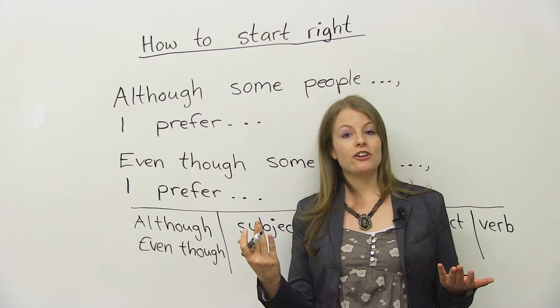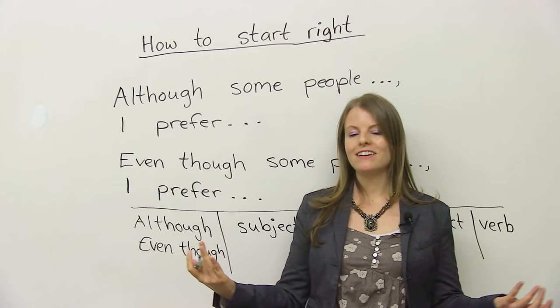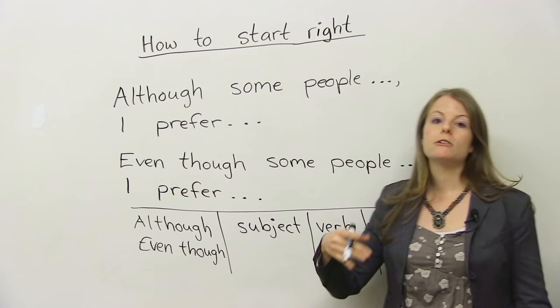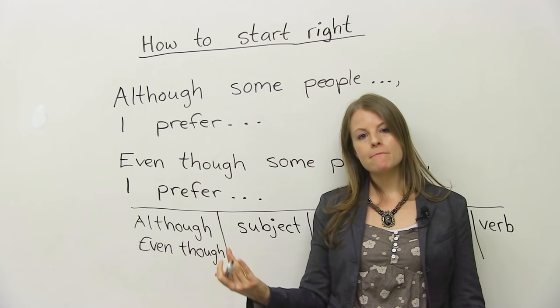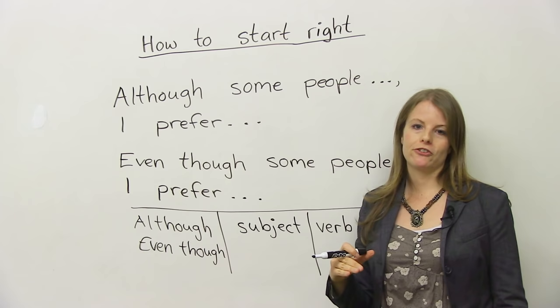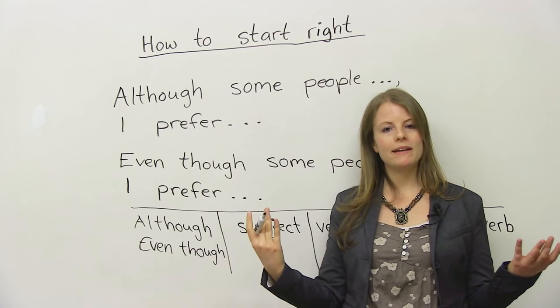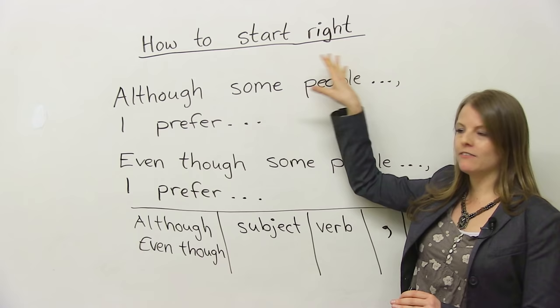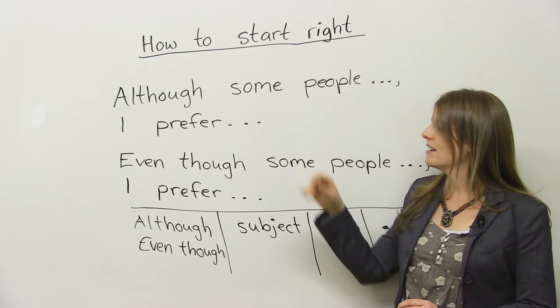Another example. Imagine somebody wants to know if I like cats better or dogs better. What is the better animal? Well, maybe if I like dogs better, I would say, although some people prefer cats, I prefer dogs. Although some people prefer to live in cold countries, I prefer warm countries. So you can use this in essays, in speaking, in so many different ways. It's always a good idea to start with the opposite of what you believe, a good point of the opposite, and then to say your opinion.